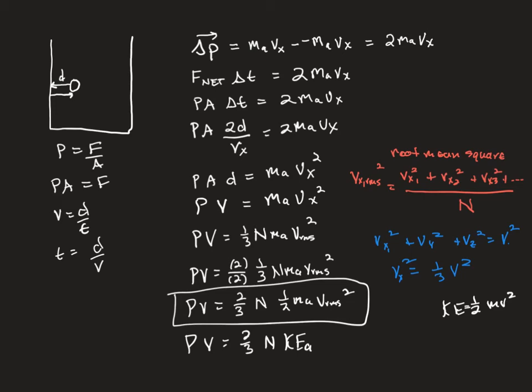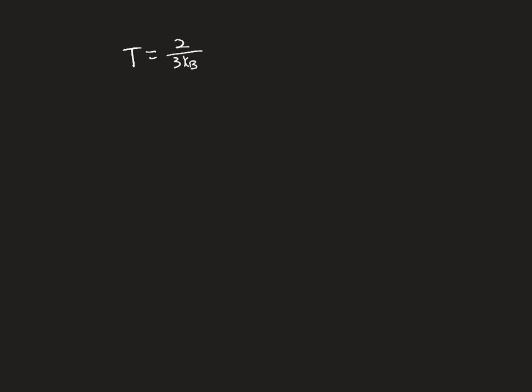If we want the kinetic energy of the gas as a whole, we need to multiply by the number of particles. Substituting in the ideal gas law — using the version with the number of particles and the Boltzmann constant — we get that temperature equals (2/3k_b) times (one half times mass of the atom times v_rms²). Or equivalently, temperature equals (2/3k_b) times the kinetic energy of one atom. So here we can see that temperature is really just a measure of kinetic energy.